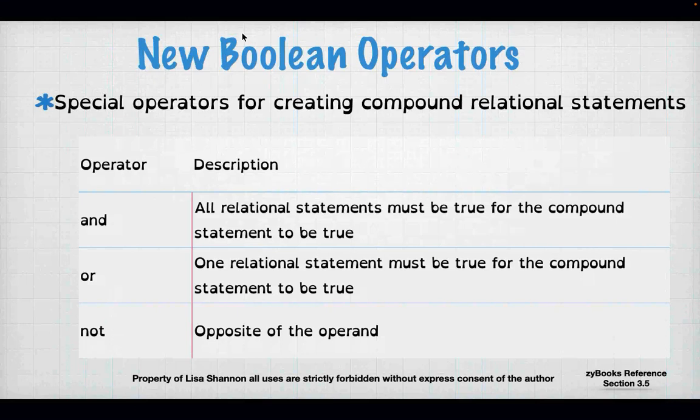We have some new Boolean operators: and, or, and not. 'And' says all my truths and falses are all true — everything comes out to true. 'Or' says if one thing comes out to true, they're all true. 'Not' says it's the opposite of. There are good times to use 'not.' I try to write my statements in such a way where I don't have to use not, but sometimes I do.